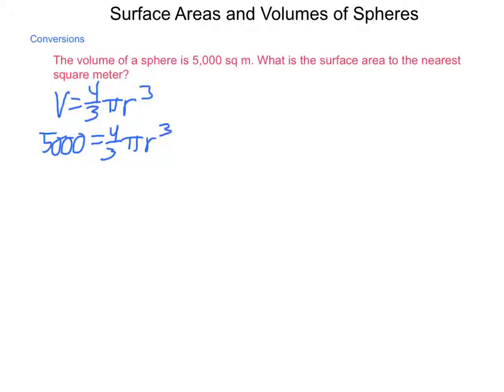I can multiply both sides by 3 fourths, which would give us 3,750 equaling pi r cubed. Dividing by pi will leave us with r cubed equaling 3,750 over pi. Solving for r, we would take the cubed root of each side. So, now r is approximately equal to 10.6.